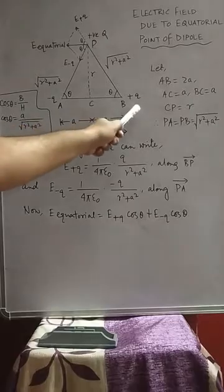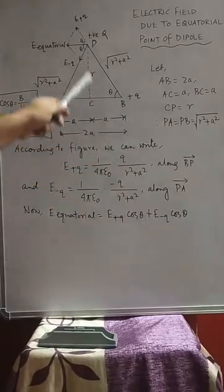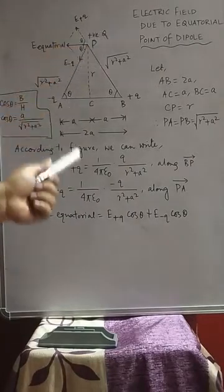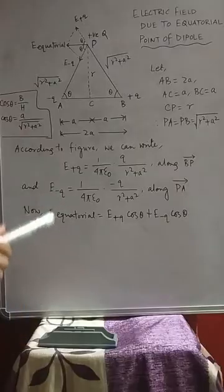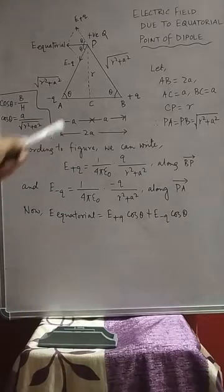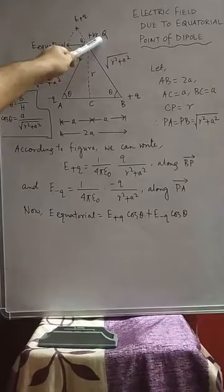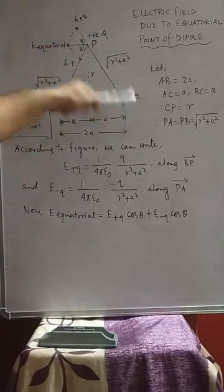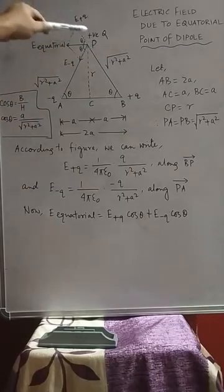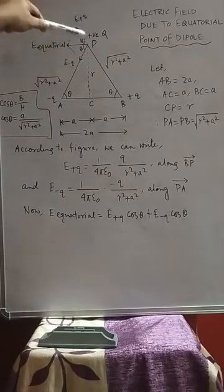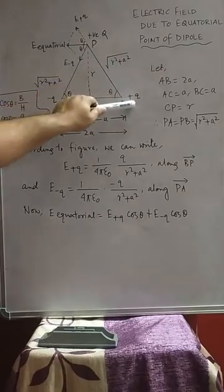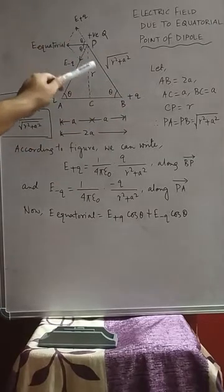In the dipole AB, we have placed one minus charge at point A and one plus charge at point B. At this equatorial point P we have placed a positive charge. Since one positive charge is placed at P and there is also a positive charge at B, these two positive charges will repel each other, so E+q is directed upward away from B.